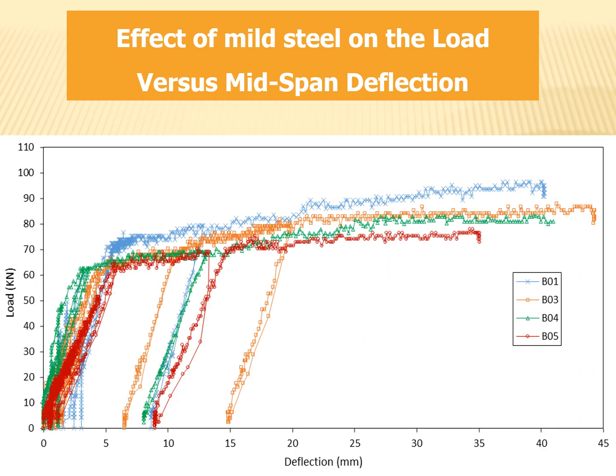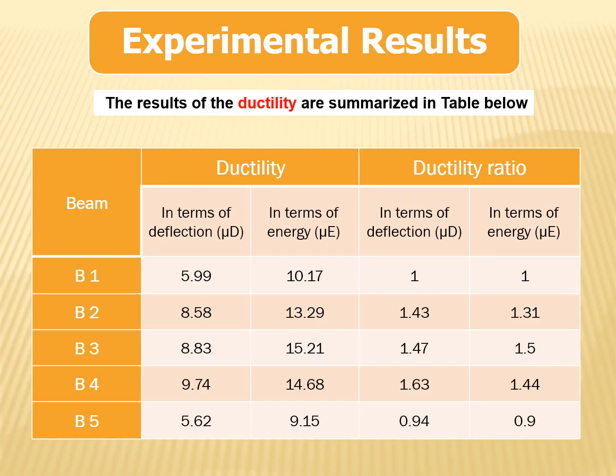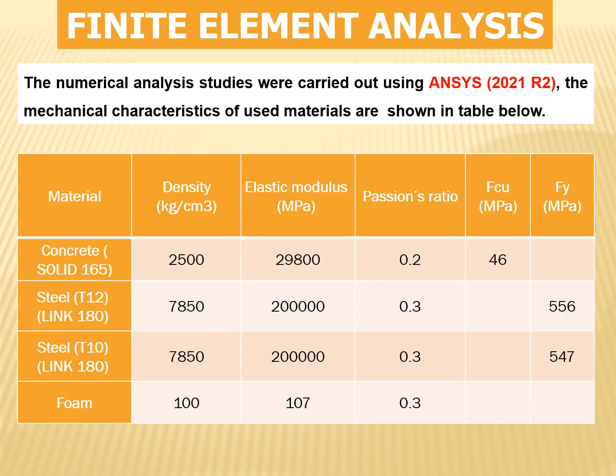The effect of mild steel on the load versus mid-span deflection is shown in the figure. The results of the ductility are summarized in the table below.